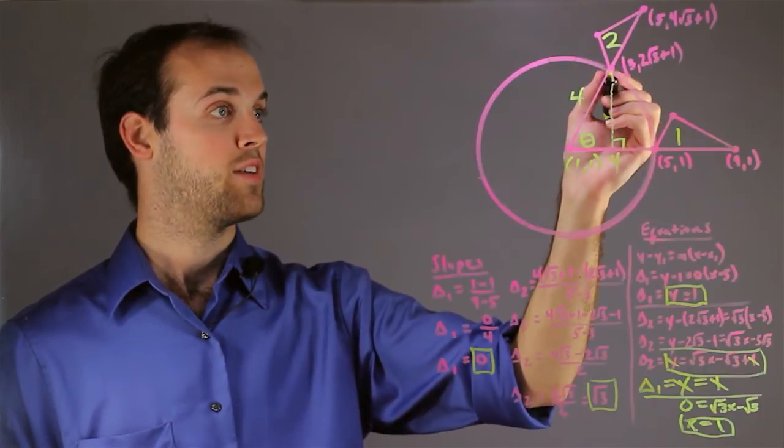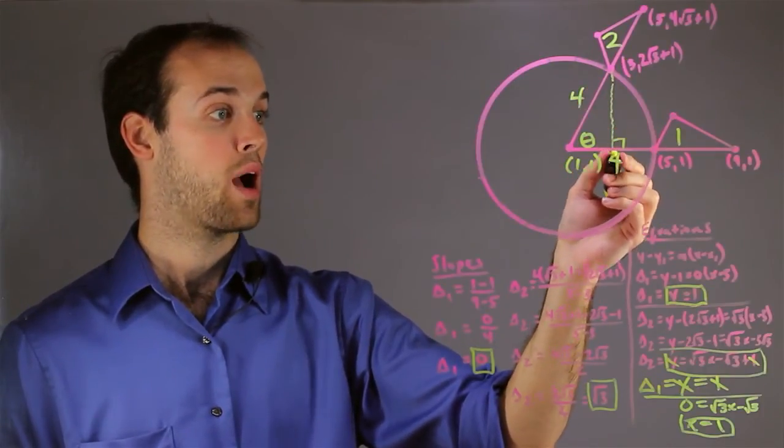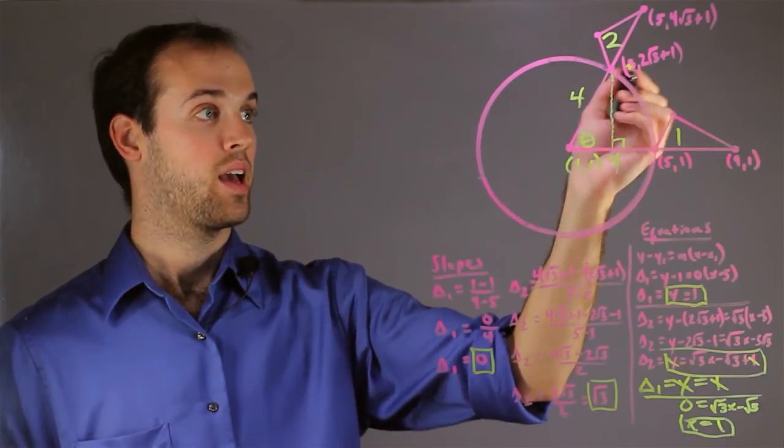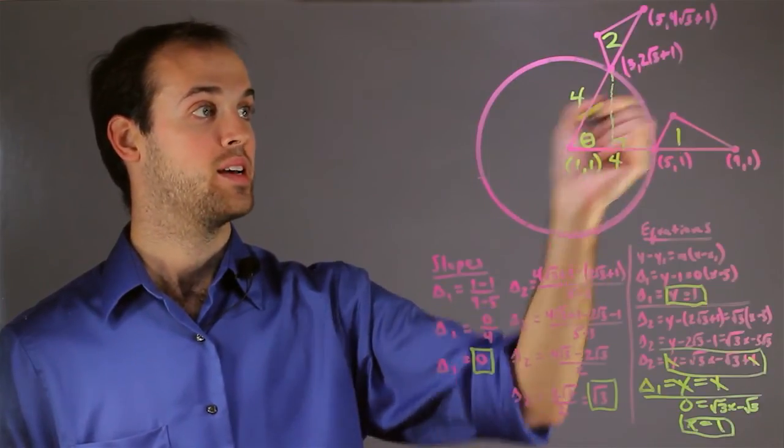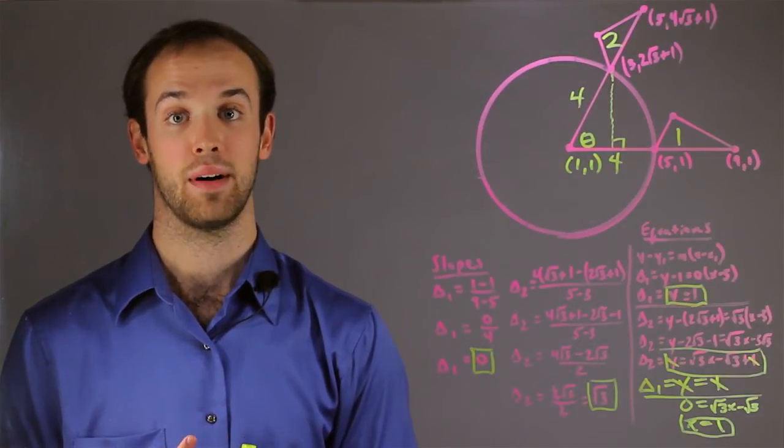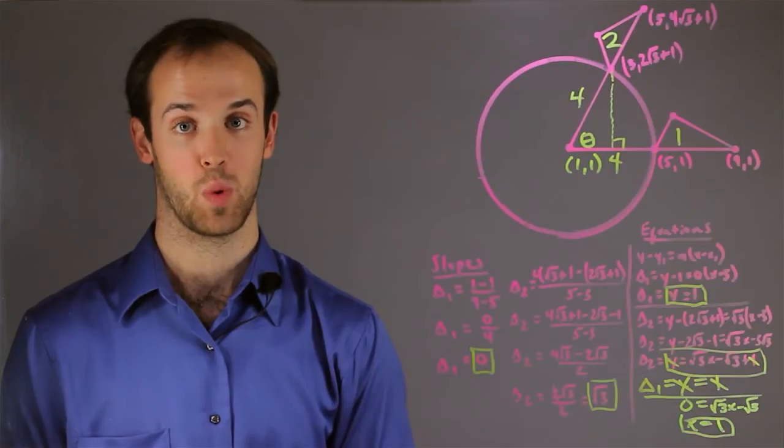And if I look at this altitude that I've dropped, I know that it drops down to y-value 1, and the y-value of this point is 2 root 3 plus 1, which means that it must have changed 2 times the square root of 3 units.